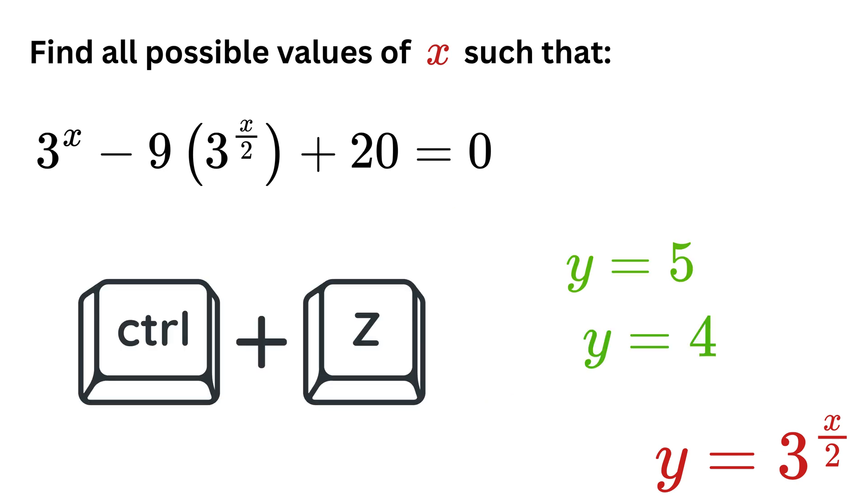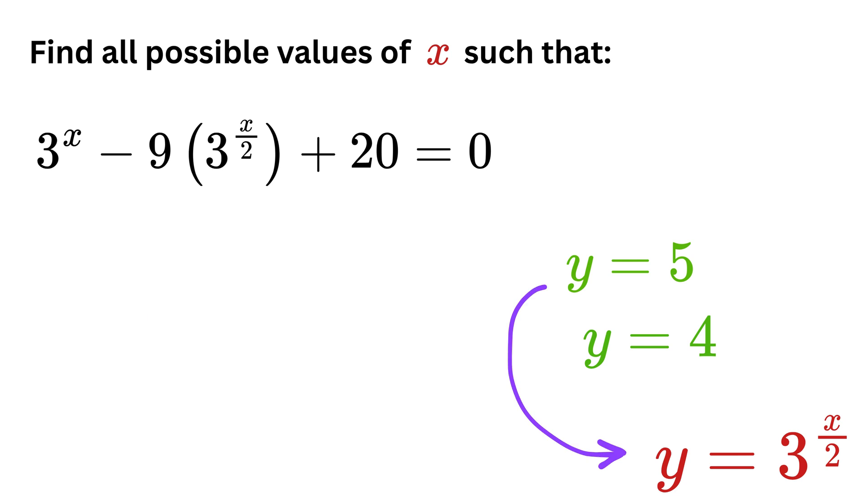Awesome. Finally we will undo our substitution to recover x. Recall that y was 3 raised to x divided by 2, so we have two cases: 3 raised to x divided by 2 equals 5, and 3 raised to x divided by 2 equals 4.